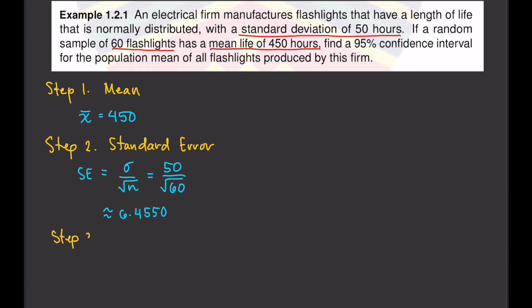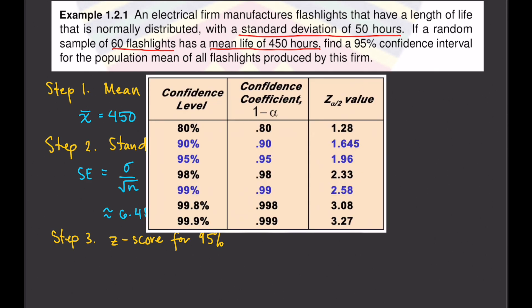Step number three is to find the associated z-score for 95%. Looking at the z-table for a 95% confidence level, the z-value is 1.96.